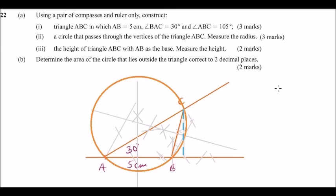You are required to measure the radius. From the center point, extend your divider either to A, B, or C and measure the radius. That radius equals 3.5 cm. You can allow a tolerance of 0.1 cm. So that is the length of the radius.